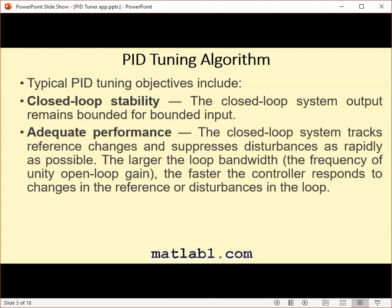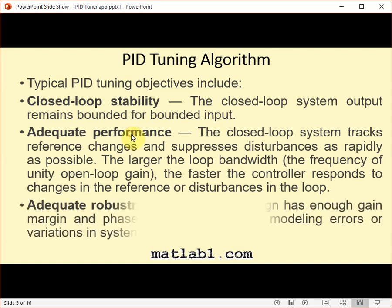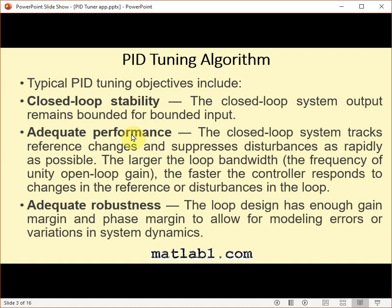Adequate performance: the closed loop system tracks reference changes and suppresses disturbances as rapidly as possible. The larger the loop bandwidth — the frequency of unity open loop gain — the faster the controller responds to changes in the reference or disturbances in the loop. Adequate robustness: the loop design has enough gain margin and phase margin to allow for modeling errors or variations in system dynamics.